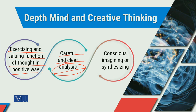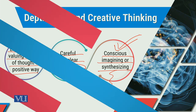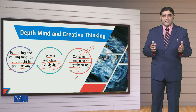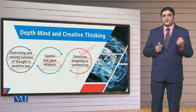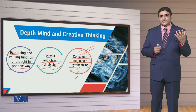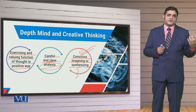When we talk about depth mind and creative thinking, conscious imaging, imagining, and synthesizing things is very important. When you do not have conscious awareness of the situation, decision making will not happen and things will not be ready to be implemented. We have to tame and tone down our conscious mind and use controlled aspects, because many thoughts and feelings will always come to your conscious mind from your subconscious and unconscious aspects.